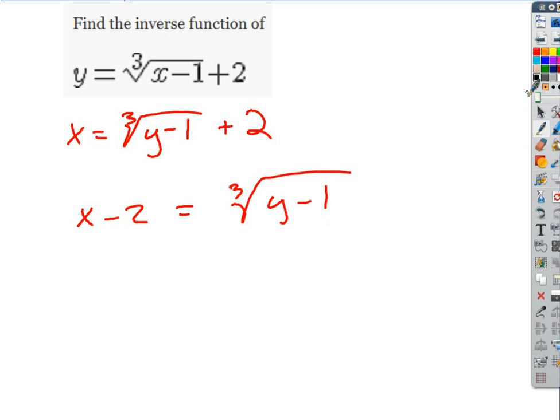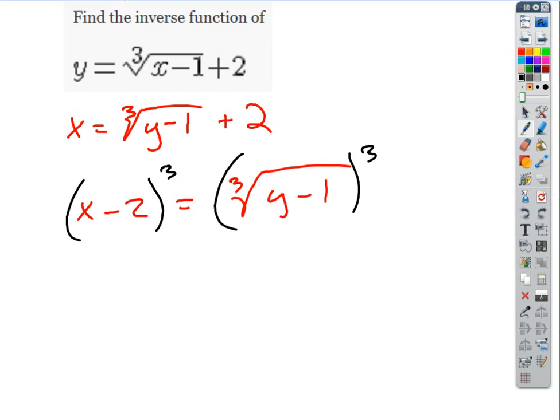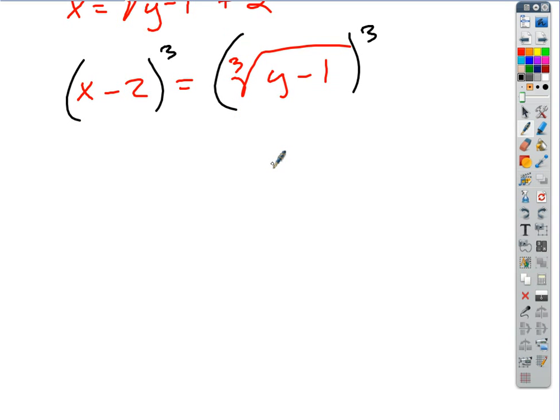Right? And so that's going to give us, over here, that's going to be real convenient. That's just going to give us a y minus 1. Over here, if I cube that all out, I'm just going to get x cubed minus 6x squared plus 12x minus 8.